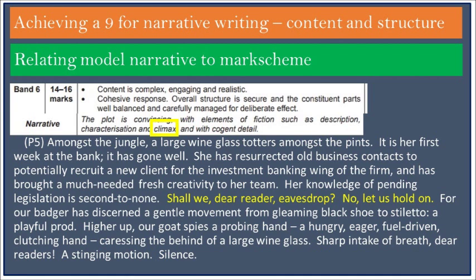Paragraph 5 starts building up to a climax through the direct invitation to the reader to eavesdrop, which is promptly withdrawn. The phrase 'let us hold on' implies that something exciting may be about to happen — something worth waiting for. The momentum continues with, firstly, the description of a shoe nudging a stiletto, and then the introduction of a probing hand. Note that you need to wait until the second half of the sentence to find out exactly what the hand is probing. The clarifying, hyperbolic use of adjectives — hungry, eager, fuel-driven, clutching — delays this revelation further, thus increasing tension. However, the metaphor of the large wine glass from the beginning of the paragraph is extended, another example of the cohesion within the narrative, so that the reader has to deduce that the woman has been groped. The paragraph then switches to dramatic short sentences for effect, including one implying that the woman has slapped the groper. The switch to short sentences is dramatic and further increases the sense of tension.